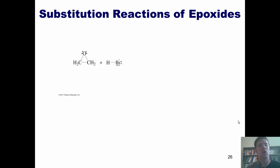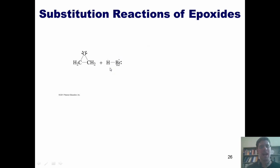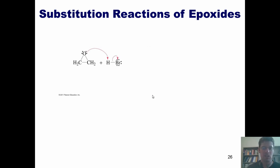As it turns out, there are additional reactions that epoxides can do. If I take an epoxide and treat it with an acid such as HBr, the lone pair of electrons on this oxygen can push down and form a bond with that hydrogen, kicking off the bromide in one step to give a positively charged intermediate.